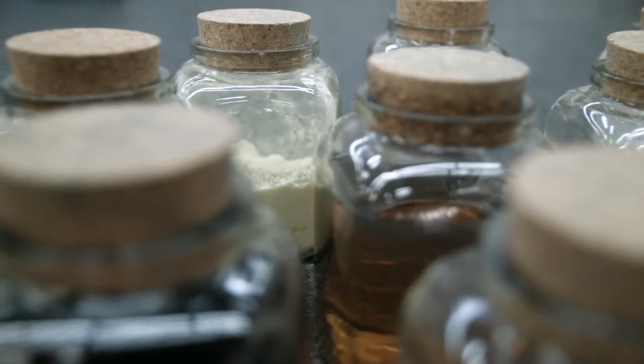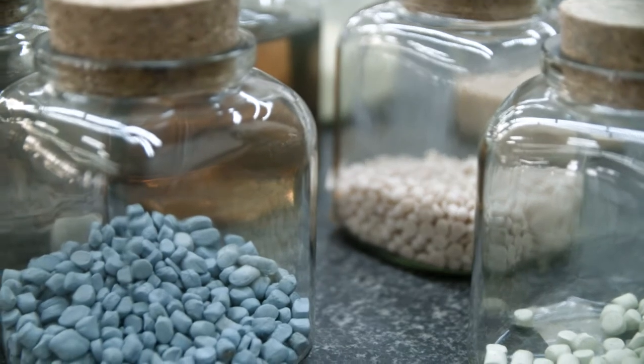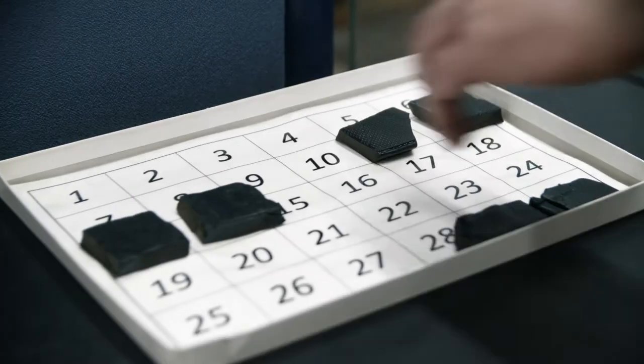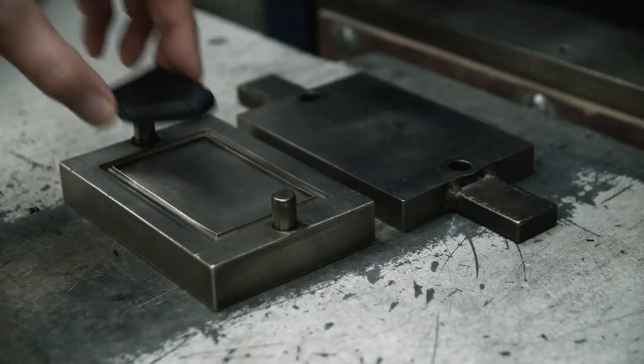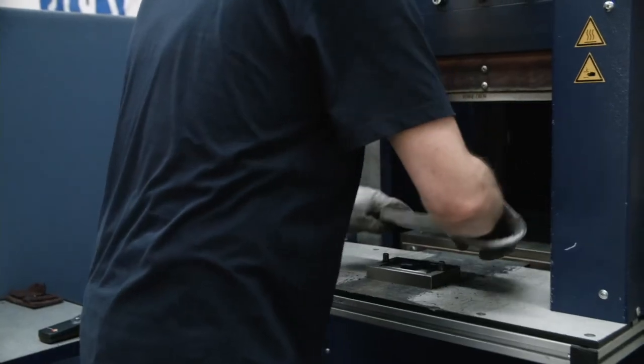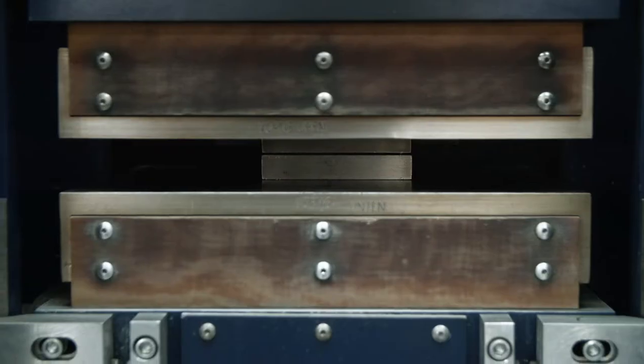The Vulcan experts develop the ideal recipe depending on the desired product characteristic. The recipe precisely prescribes how much of the individual component must be used in each case. However, the rubber mixture produced at this stage cannot be used, because the rubber is not dimensionally stable.